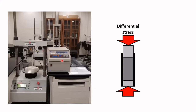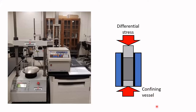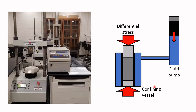Compared to laboratory one, we are adding one more component: the fluid pump. We are going to have the sample where we apply the differential stress, submerged into a confining vessel. This confining vessel is connected to a fluid pump, which allows us to increase the confining pressure in the system. Once we set the confining pressure to the desired value, we apply our differential stress and perform our measurements.